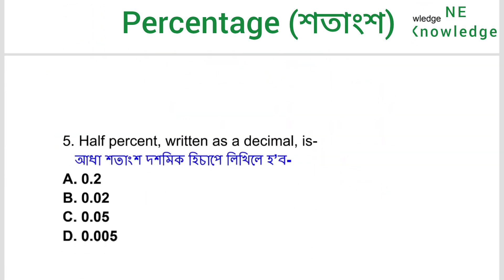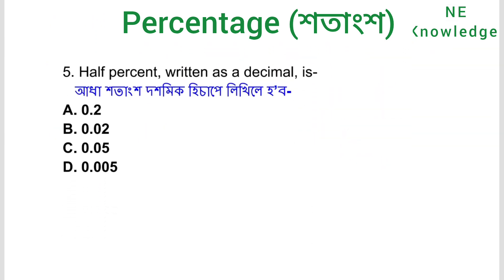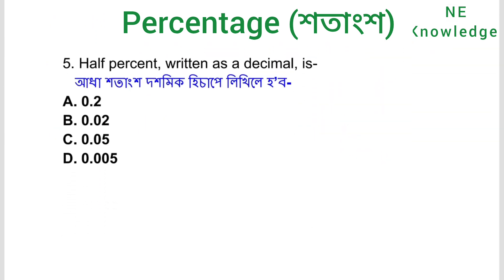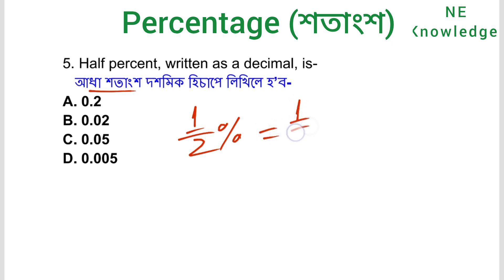Next, question number five: half percent written as a decimal. This 0.5% is an actual percentage, which can be expressed as 0.5 divided by 100, adding up to a single percentage value.